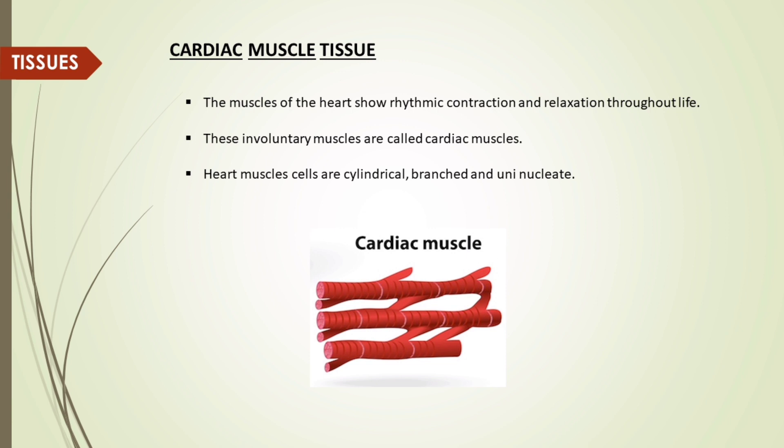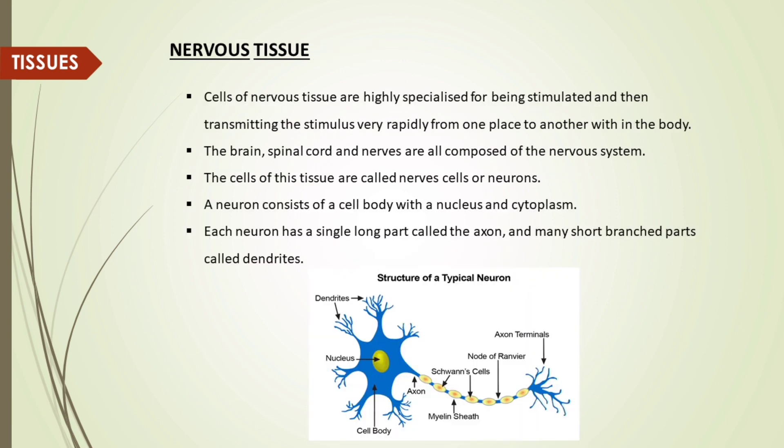Cardiac muscle tissue: the muscles of the heart show rhythmic contraction and relaxation throughout life. These involuntary muscles are called cardiac muscles. Heart muscle cells are cylindrical, branched and uninucleate.